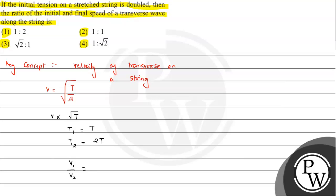Since the string is the same, mu is the same - the linear density will be the same. So this will be root T1 by T2. Here we can substitute the values: T1 equals T and T2 equals 2T. The result comes out to be 1 upon root 2.